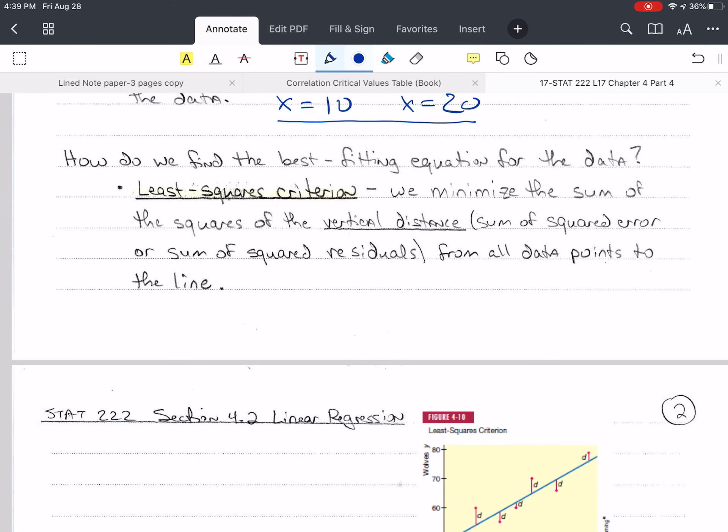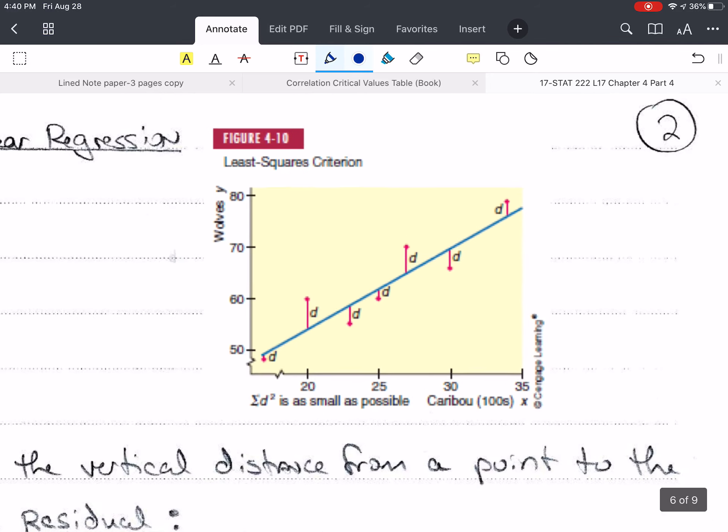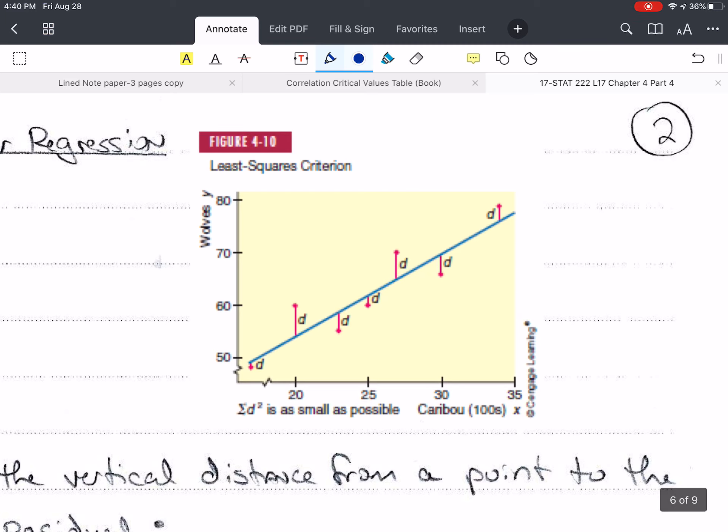How do we find the best-fitting equation for the data? This is called a least squares criterion. Criterion is the singular form for criteria, which is plural, meaning more than one. What we do is we minimize the sum of the squares of the vertical distance. This is also called the sum of squared errors, or the sum of squared residuals.